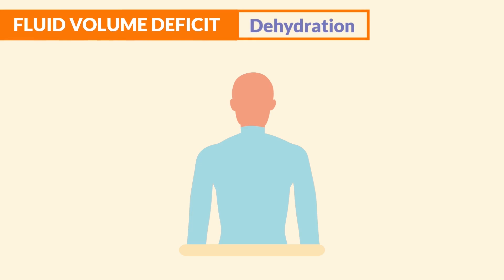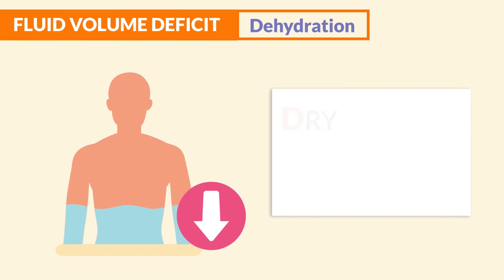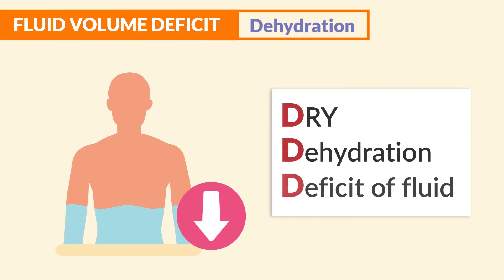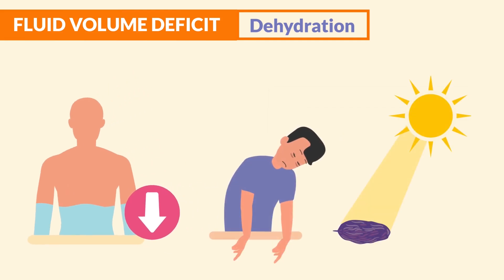Moving on to the next topic: fluid volume deficit, a common manifestation of dehydration. Clients have a deficit or decrease in fluid — just look at the D's and think 'dry' for dehydration. With a deficit of fluid, clients dry out like a raisin in the sun, appearing sunken, shriveled up, and very weak.